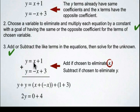Whenever we have opposite coefficients, we're going to add, because when we add terms with opposite coefficients, the solution is 0. And 1 plus 3 is 4. So this simplifies to 2y equals 4.